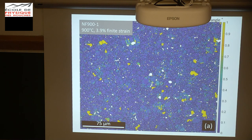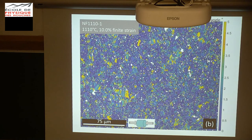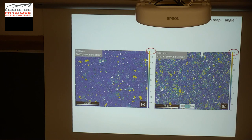First EBSD map: we compare the lowest temperature with the highest temperature. This is a misorientation map. The maximum is one degree, so nothing much is happening in this sample — it's mostly blue with some yellow grains. At higher temperature it's a little more encouraging, with more yellow grains and some features developing in the large grains. But the scale only goes from 0 to 5 degrees, so altogether there's not that much misorientation in these samples.